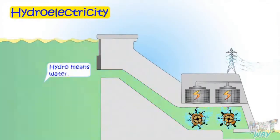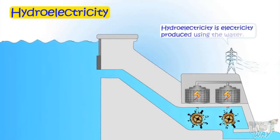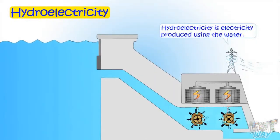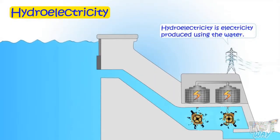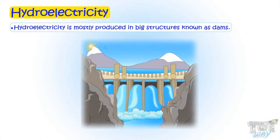Hydro means water, and hydroelectricity is electricity produced using water. But how? Let's see. Hydroelectricity is mostly produced in big structures known as dams.